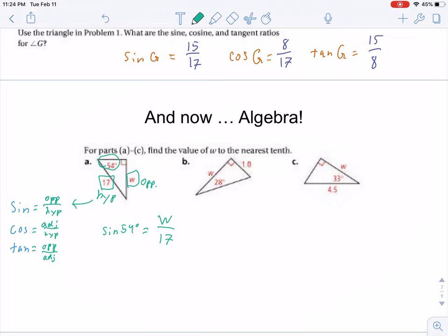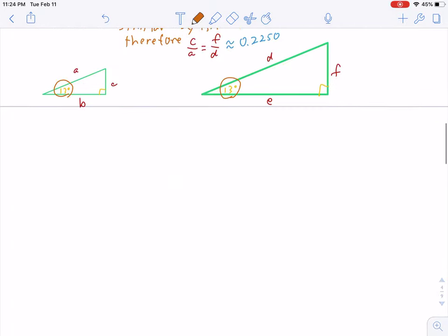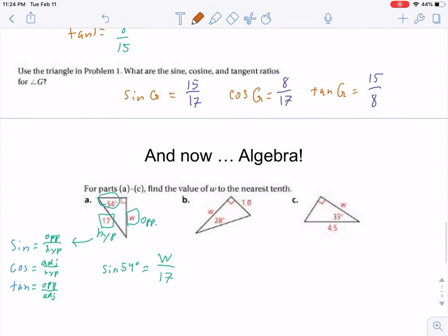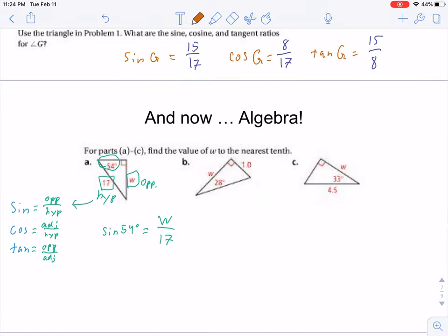Well, now what? Fortunately, as I mentioned up here, these ratios are constant, no matter what the side lengths are. So, sine of 54, according to my calculator, is 0.8090. I'll set that equal to w over 17 here, then solve it normally, and we end up with 13.75 equals w.